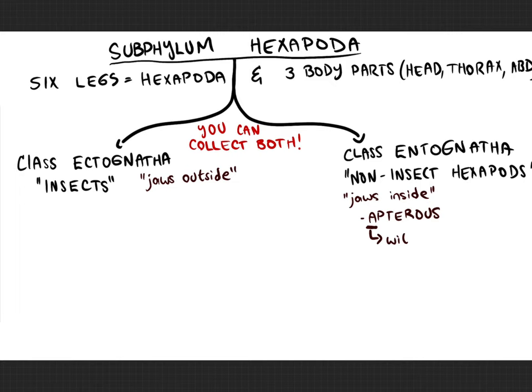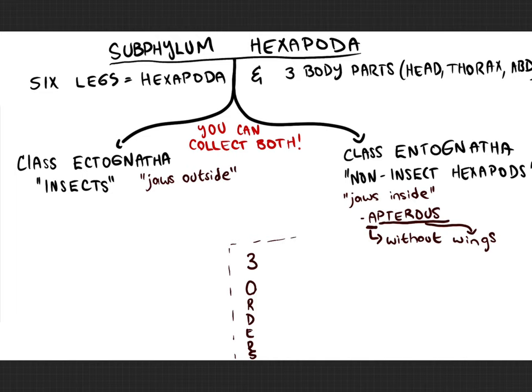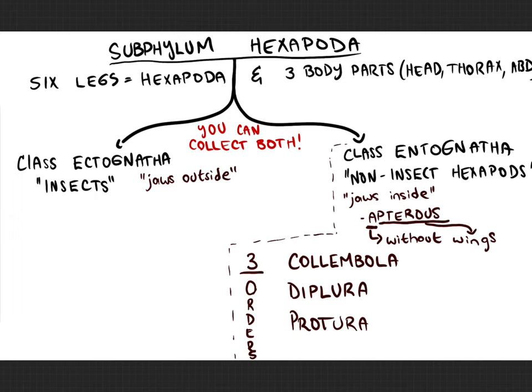The Entognatha are the non-insect hexapods, and they are entirely apterous — 'a' is Latin for without, and 'teris' refers to wings. There are three orders within the Entognatha: Collembola, Diplura, and Protura. These are all small soil-dwelling organisms, usually only a couple of millimeters or even smaller. The most common ones you'll encounter are the springtails, which belong to the order Collembola.